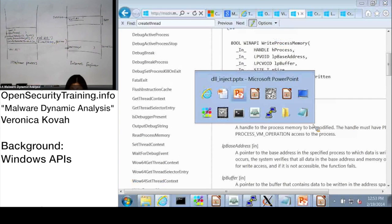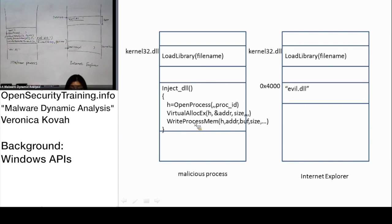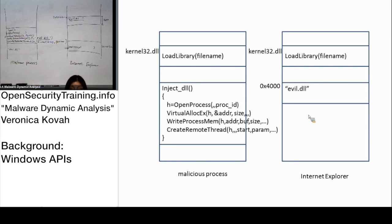Let's go back to the picture. That's how WriteProcessMemory works - getting a process handle, address of 4000. And that DLL probably already exists somewhere in the malicious process's memory area. By calling WriteProcessMemory, it is copying the memory from there into Internet Explorer's memory space. Then next, it calls CreateRemoteThread.